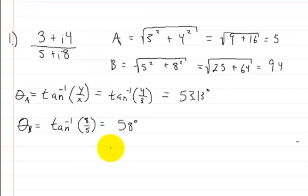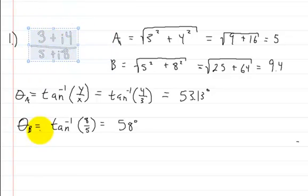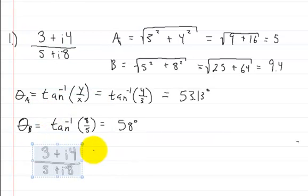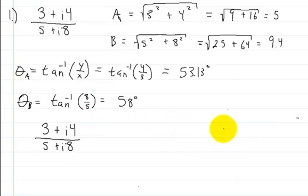So now we just have to write them out. I'm going to copy this value so I don't have to rewrite it. Now we're writing this to convert into polar coordinates. This is going to be equal to A with angle theta_A, all divided by B with angle theta_B.